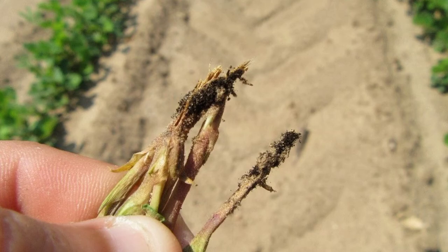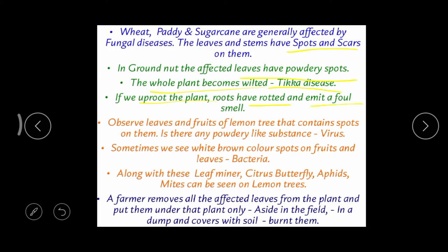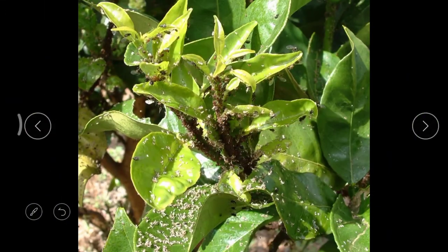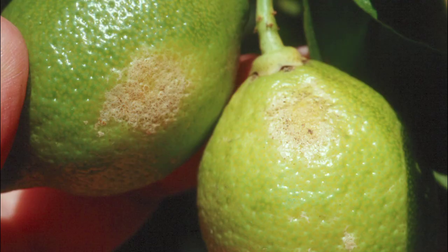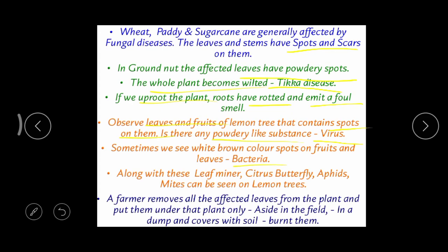When a groundnut plant affected by Tikka disease is uprooted, the roots are found to be rotted — completely spoiled with a very bad smell — and the plant dies. Citrus crops can also be affected by different types of disease — some caused by viruses and some by bacteria. Viral infection causes white colored spots over the leaves and fruits.